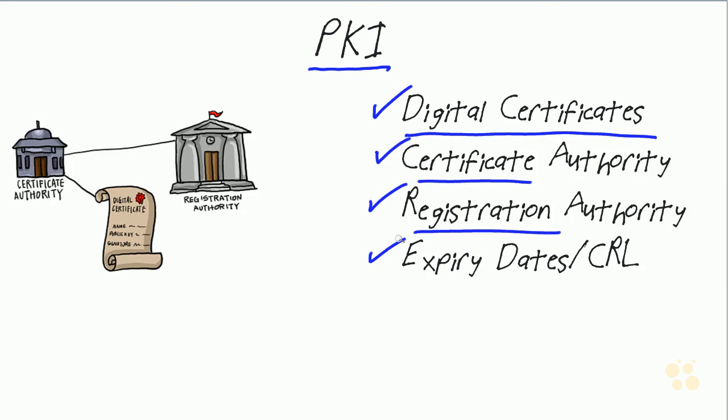We wanted to ensure that we didn't have rogue installers going out and being able to install machines incorrectly. So we went through some very elaborate combinations of digital certificates, CAs, RAs, and expiry dates to ensure that only certified VLTs went up in the system and that the certified VLTs continued to be refreshed on a regular basis, so that people weren't creating rogue processes.